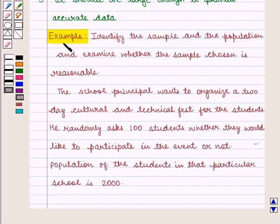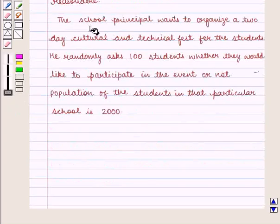Let us take an example. Identify the sample and the population and examine whether the sample chosen is reasonable. The school principal wants to organize a cultural and technical fest for the students. He randomly asks 100 students whether they would like to participate in the event or not. Population of the students in that particular school is 2,000.